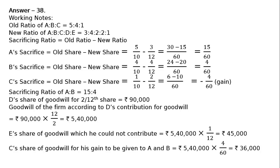C's share of goodwill for his gain is to be given to A and B. That is equal to Rs. 5,40,000 multiplied by 4/60, which means C's share of gain, that is Rs. 36,000.